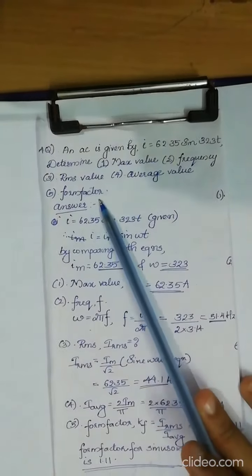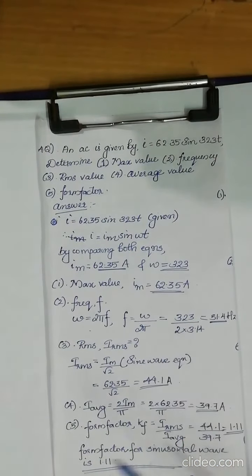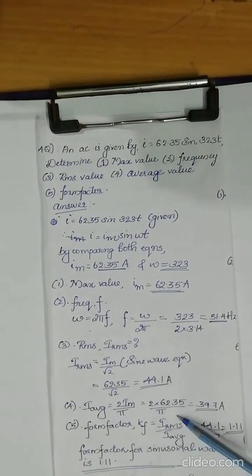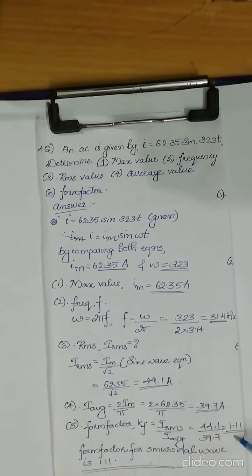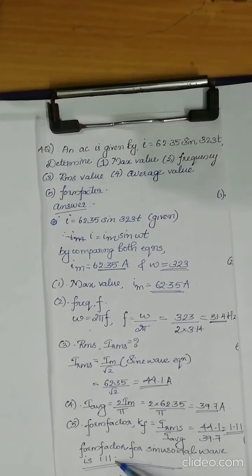So i average, irms, and the next value is to find out the value of form factor. The form factor is given by irms by i average. So irms value and i average value is used to form the form factor. Always the form factor for a purely sinusoidal pulse is 1.11.